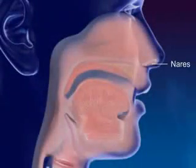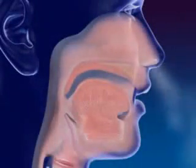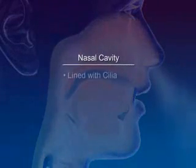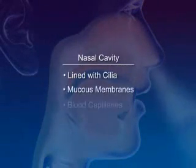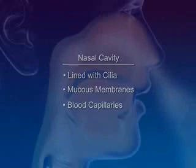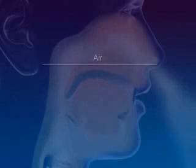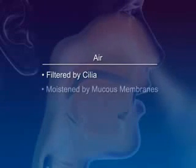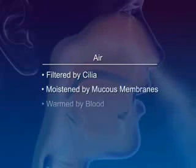Nairs are the openings to the nose. The nasal cavity is lined with cilia, mucous membranes, and blood capillaries. The air is filtered by cilia, moistened by mucous membranes, and warmed by the blood.